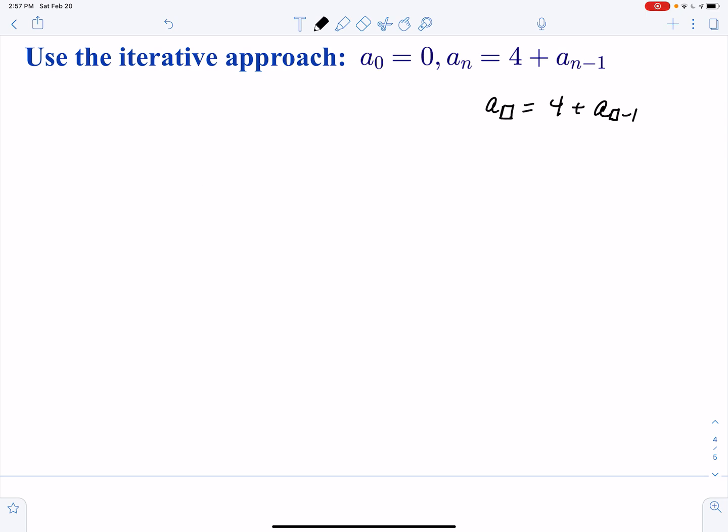So here is where we start. a sub n is equal to 4 plus a sub n minus 1. Now what I'm going to do, I want to substitute something in here. So I know by the sequence definition, 4 plus now, what is a sub n minus 1? Using this, I know that this is 4 plus a n minus 2 because it's n minus 1 minus 1.